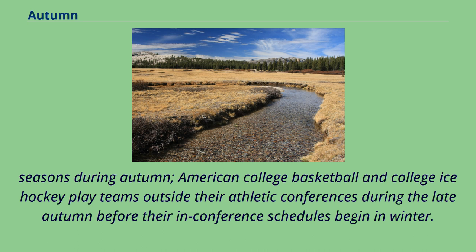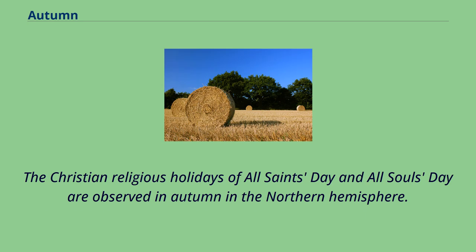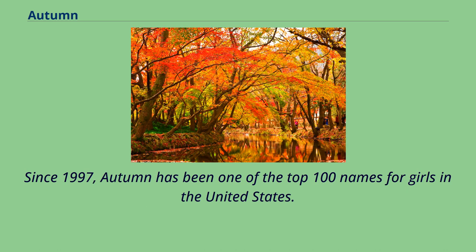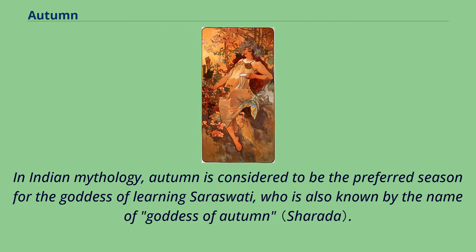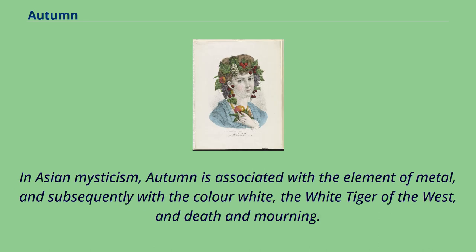The Christian religious holidays of All Saints Day and All Souls Day are observed in autumn in the Northern Hemisphere. Since 1997, autumn has been one of the top 100 names for girls in the United States. In Indian mythology, autumn is considered to be the preferred season for the goddess of learning Saraswati, who is also known by the name of goddess of autumn. In Asian mysticism, autumn is associated with the element of metal, and subsequently with the color white, the white tiger of the west, and death and mourning.